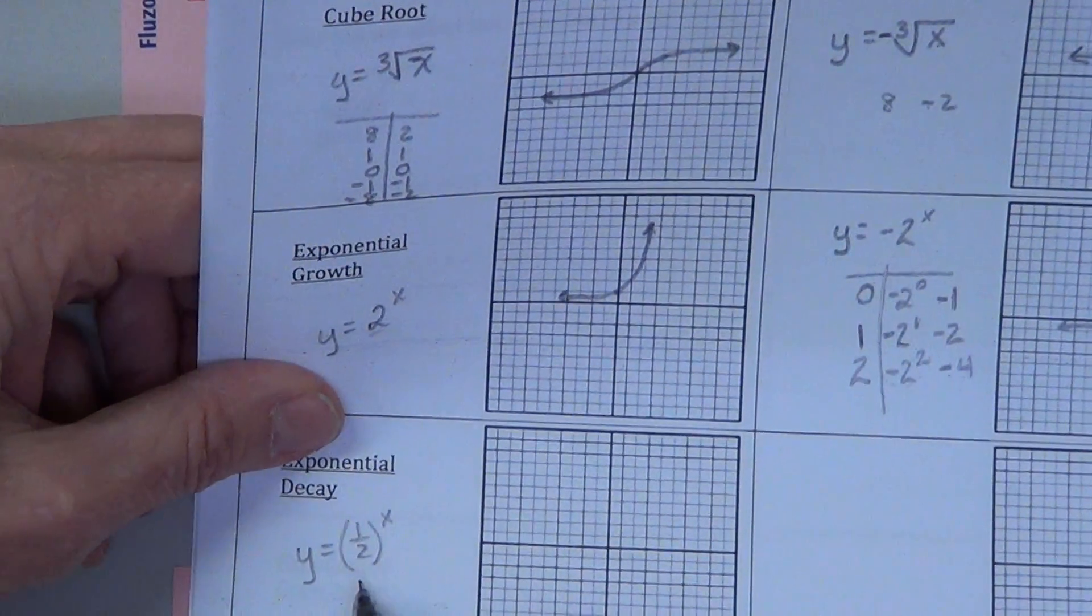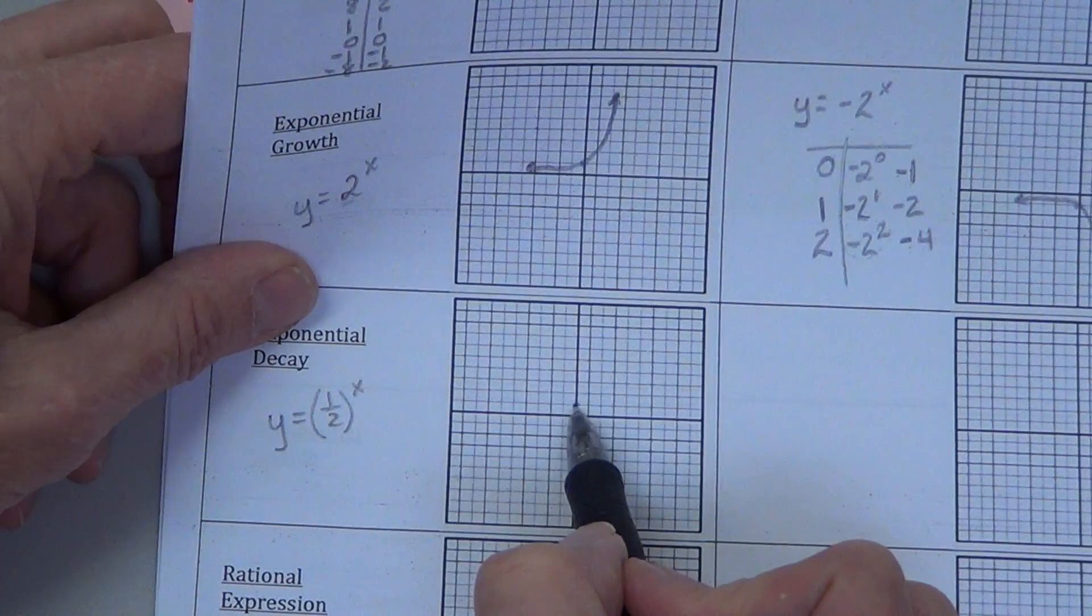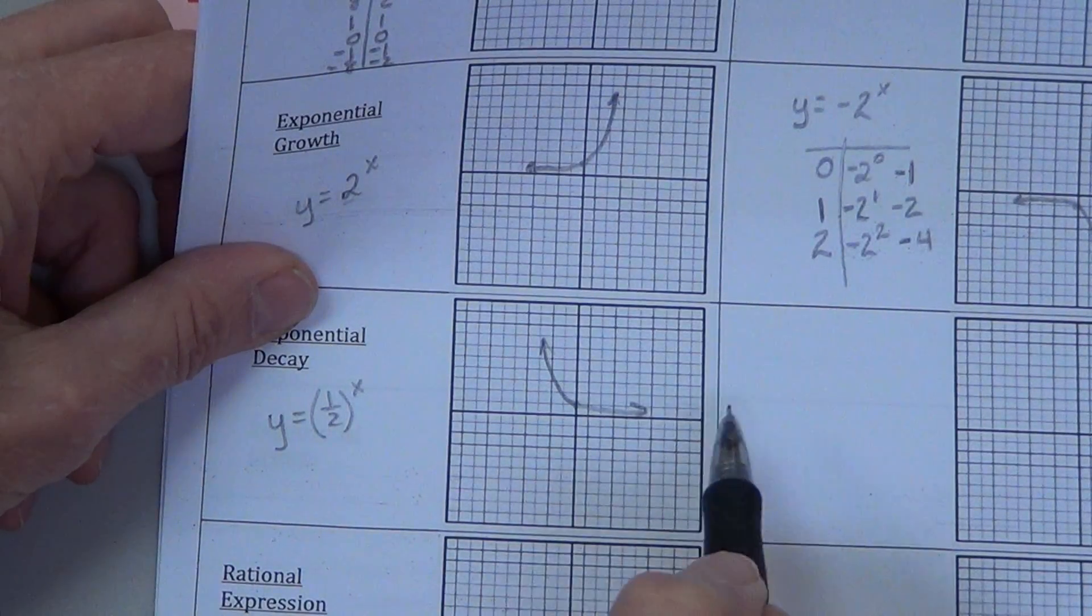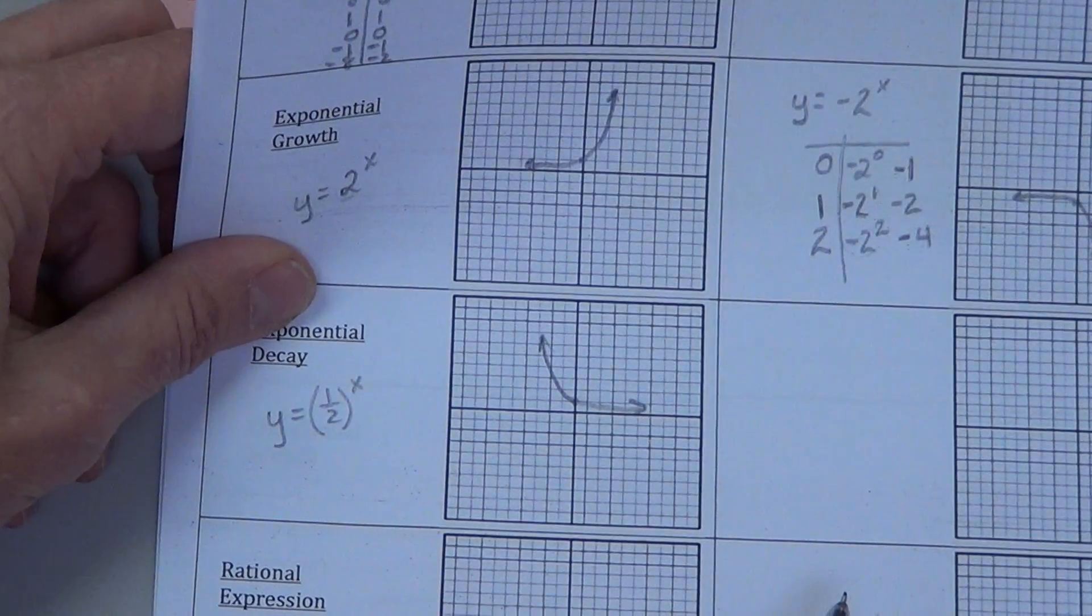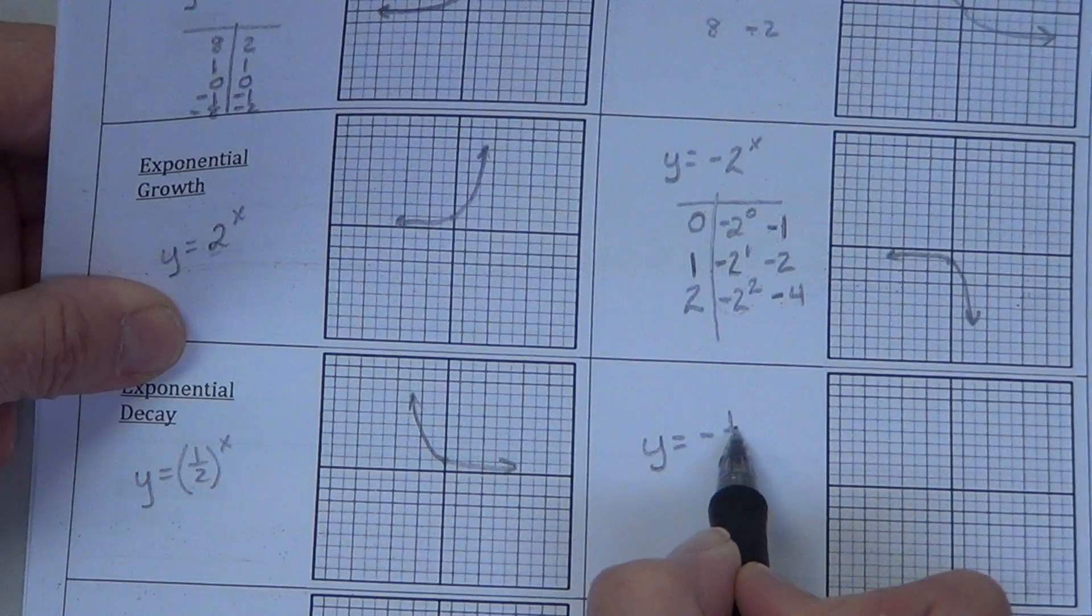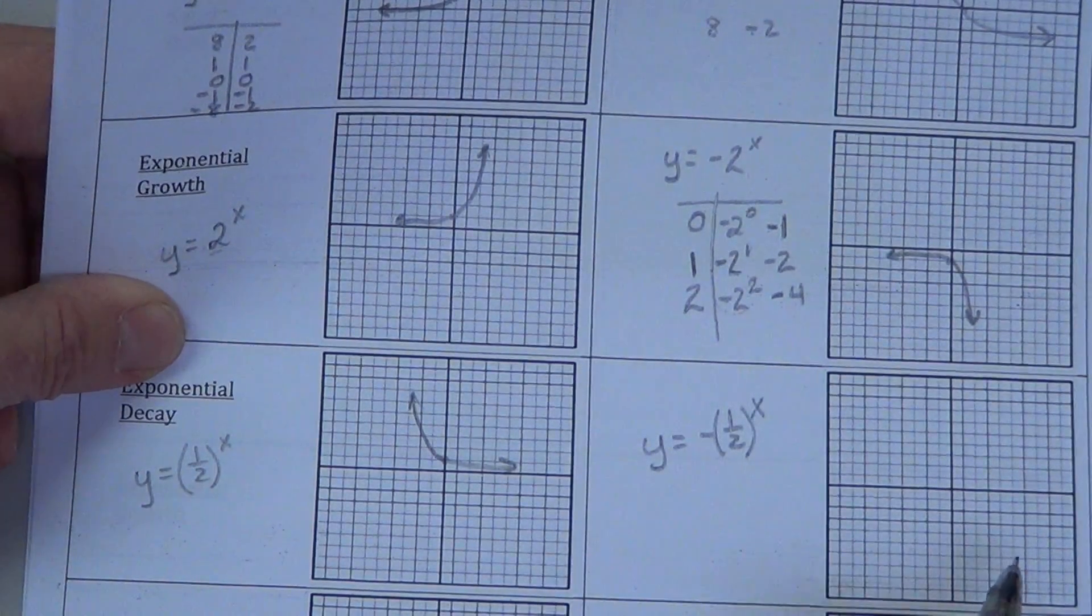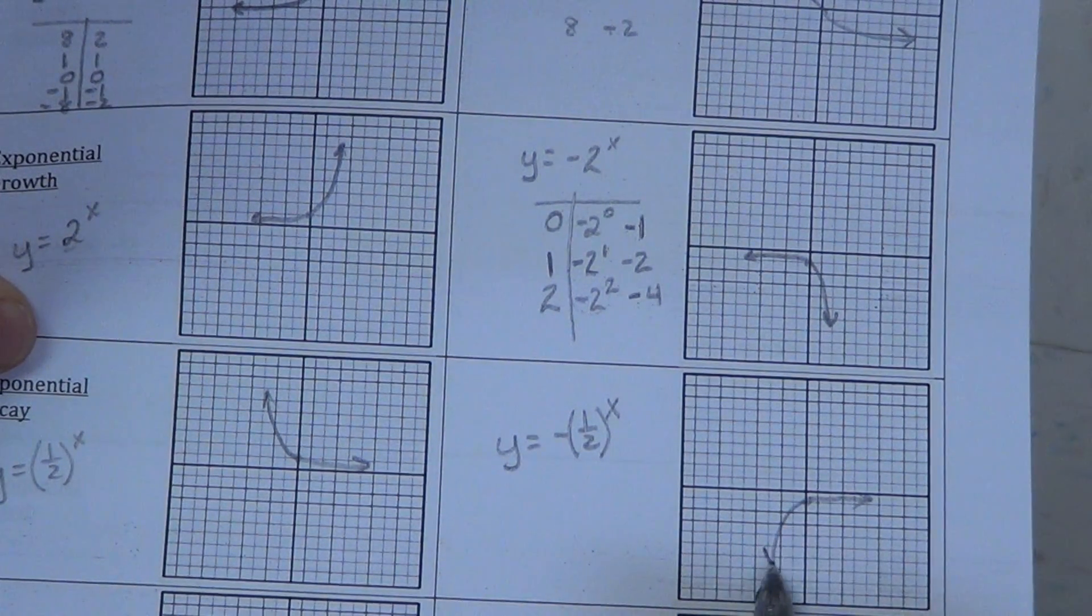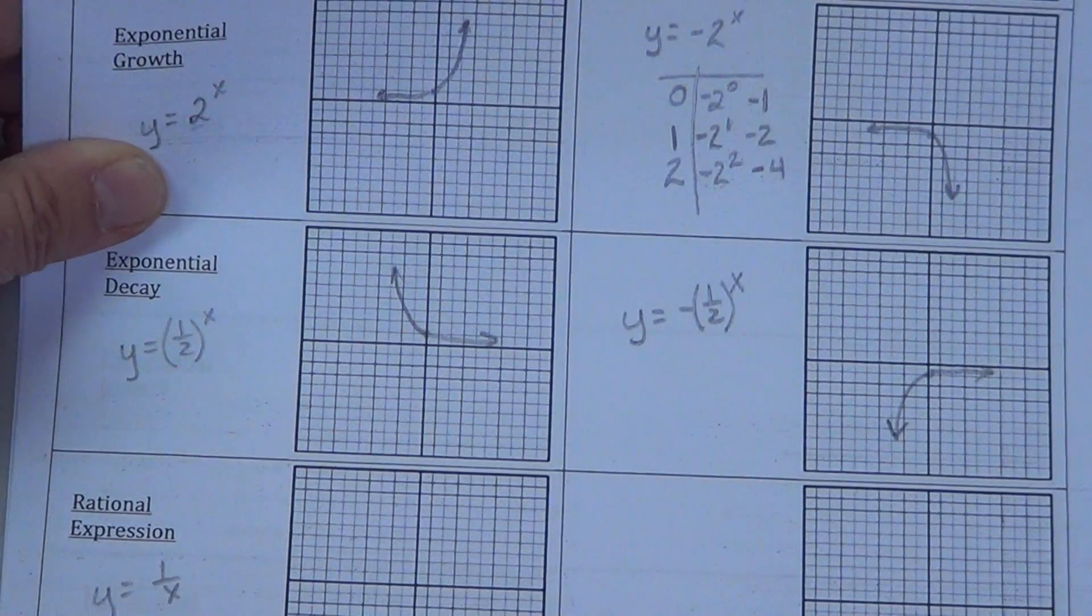Okay, same thing on the one half exponential decay. Remember, our L went this way this time because it's decaying going left to right, decaying by one half. So in order to reflect that, if you've already gotten ahead of me and you went negative one half raised to the x, you are correct. It will go just like this, just a reflection of that graph. And it is caused by that negative in front.